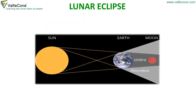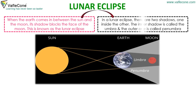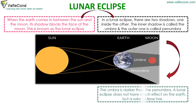Lunar Eclipse. When the earth comes in between the sun and the moon, its shadow blocks the face of the moon. This is known as a lunar eclipse. In a lunar eclipse, there are two shadows, one inside the other. The inner shadow is called the umbra and the outer one is called the penumbra.